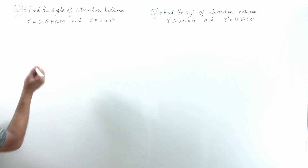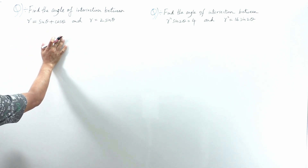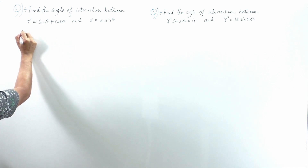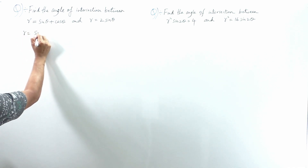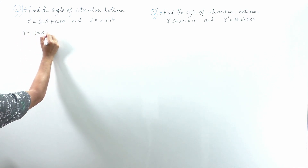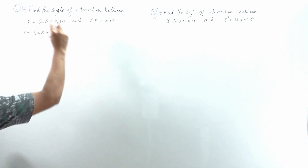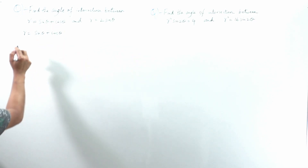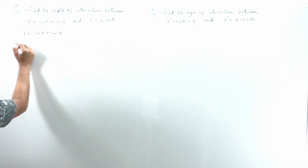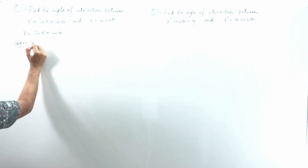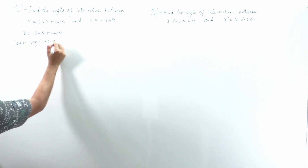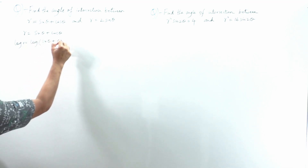We apply log on both sides. Taking the first equation, r = sinθ + cosθ, we apply log on both sides: log r = log(sinθ + cosθ).